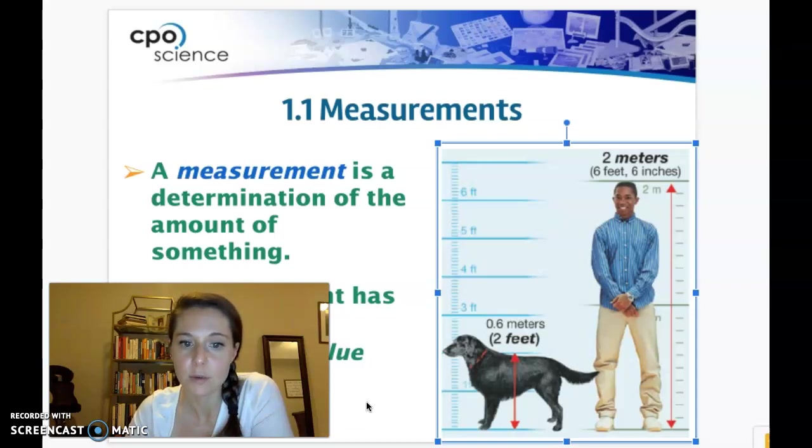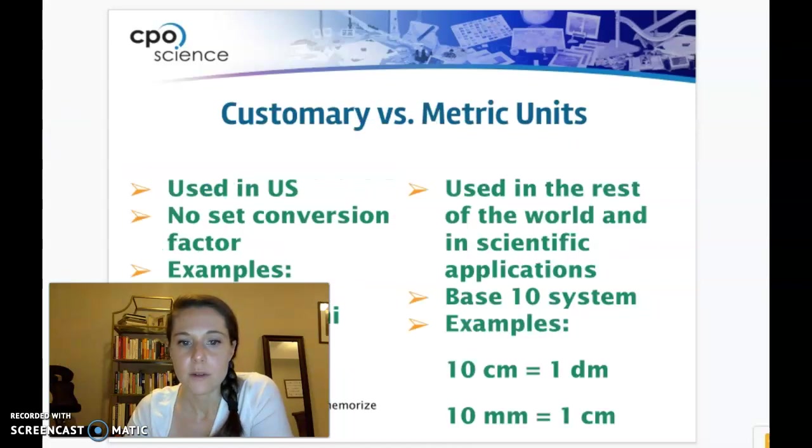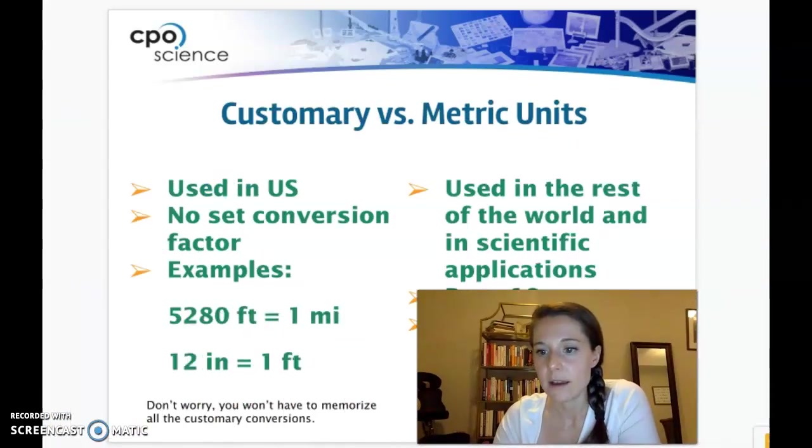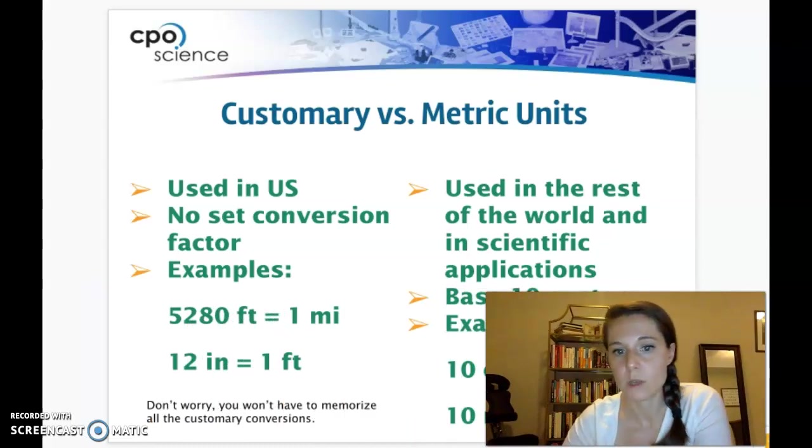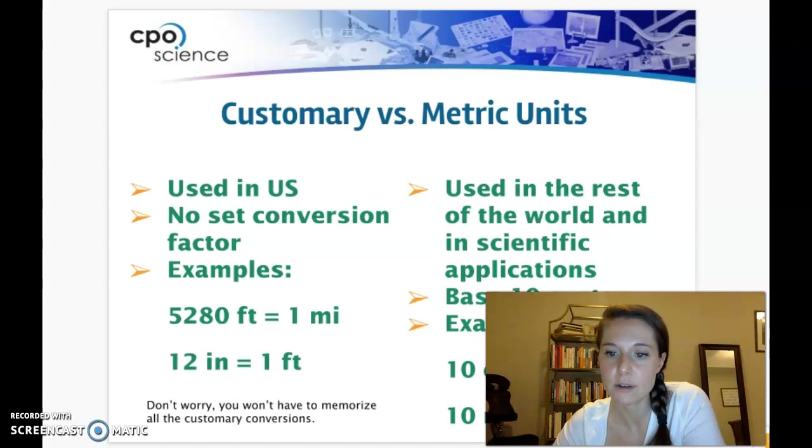So in the United States we have two systems of measurement. One we use more often than the other: customary. The customary system is a kind of a mixed bag of different units that are thrown together. They're not necessarily related to one another based on their conversion factors, and so it makes it a little bit harder to remember when you're trying to convert one to the other.